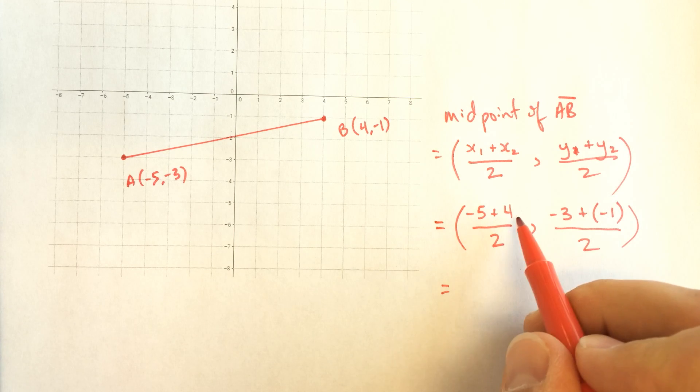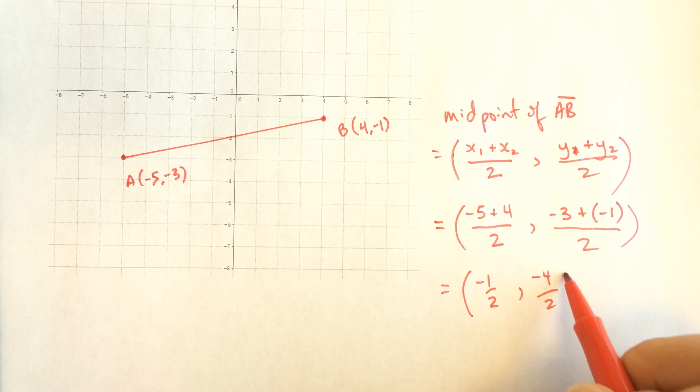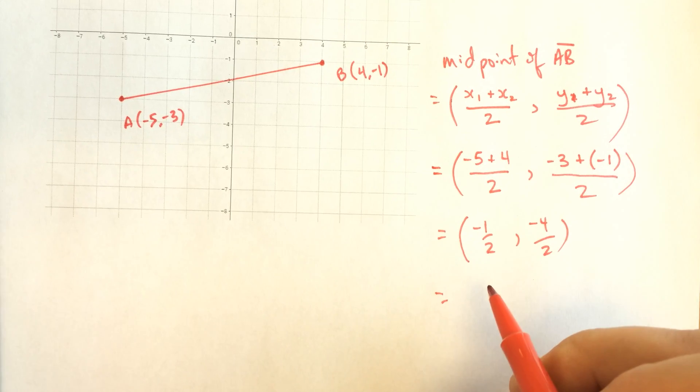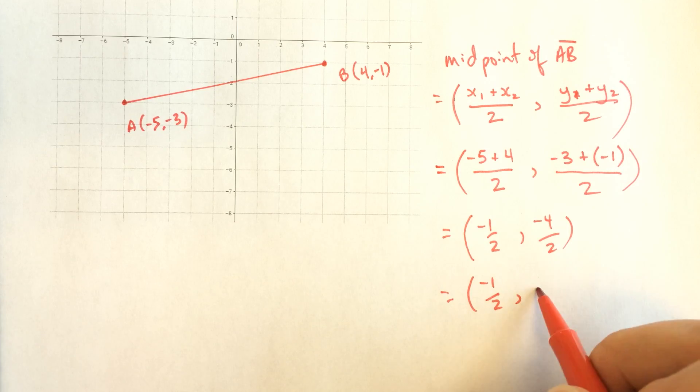So let's see, negative 5 plus 4 is negative 1. So that's negative 1 half. Over here I have negative 4 on the top and 2 on the bottom, and that last one I will rewrite as negative 2.